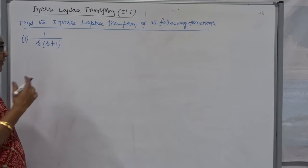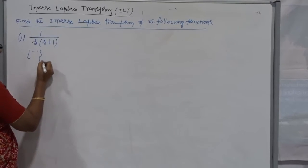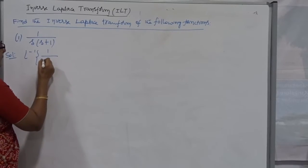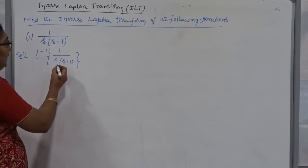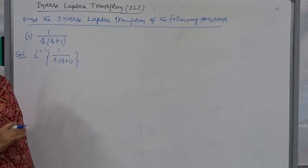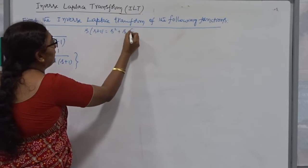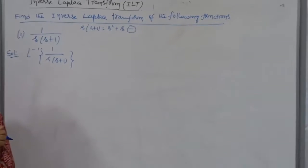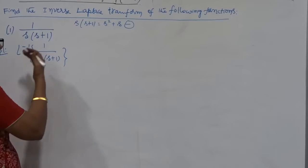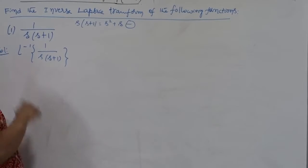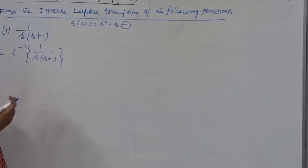Now, 1 divided by S into S plus 1 — I have to find the inverse. There are so many methods. Now if you multiply S into S plus 1, what we get is S squared plus S. There is no constant term. There are so many methods you can proceed: either you go for the completing the square method, or by using partial fractions. We don't have any standard formula for L inverse of 1 by S into S plus 1. Therefore, either you go for completing the square method or you go for partial fractions.